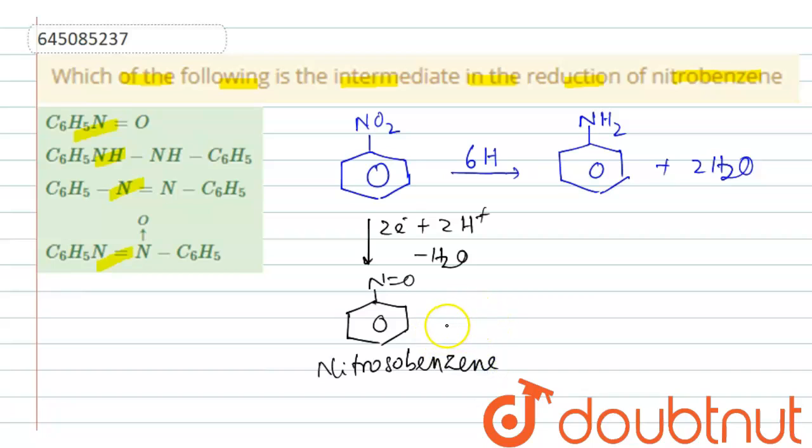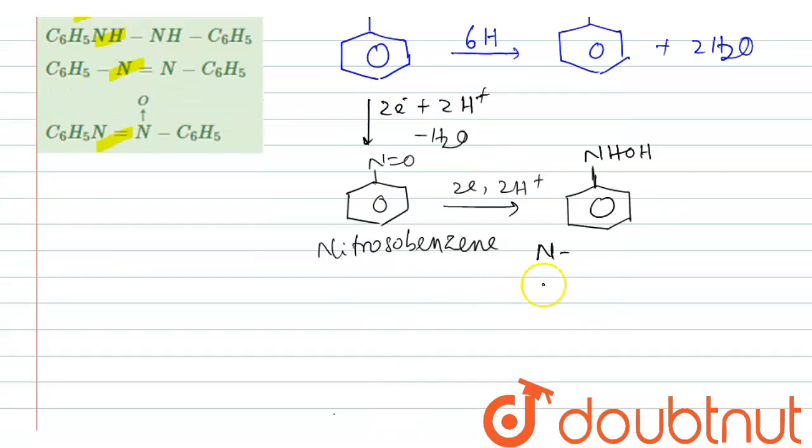Then this nitrosobenzene takes up two more electrons and 2H plus to form NHOH. This compound is known as N-phenylhydroxylamine.